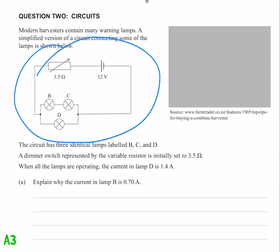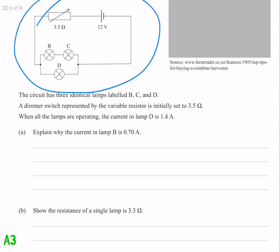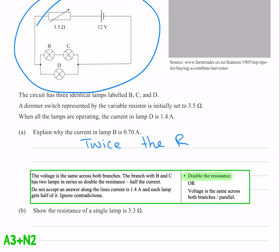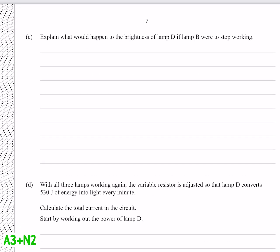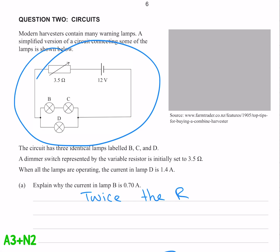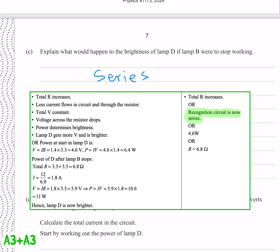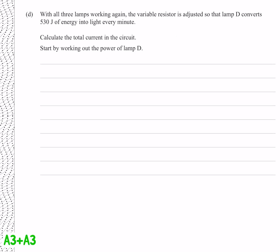We've got a circuit here, the circuit has three identical lamps, a dimmer switch represented by the variable resistor is initially set to 3.5 ohms. When all the lamps are operating, the current in lamp D is 1.4 amps. Explain why the current in lamp B is 0.7 amps. Well the reason it's half is because we have twice the resistance. Explain what would happen to the brightness of lamp D if lamp B were to stop working. Well if lamp B stopped working, then this branch just wouldn't operate, then we'd have a series circuit. And I reckon that's enough for question 2.